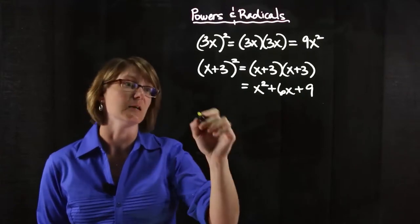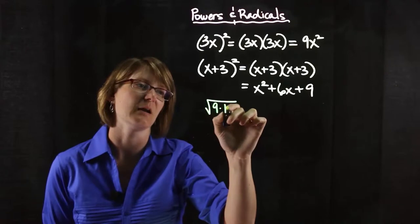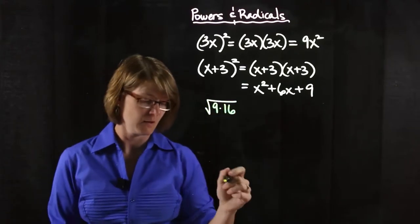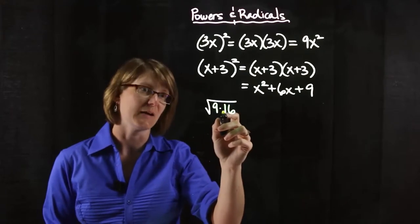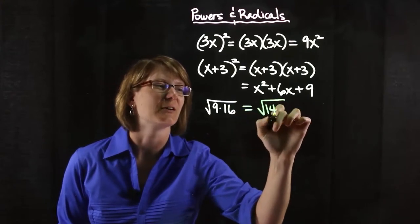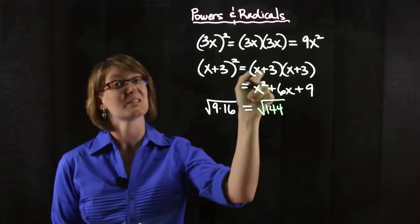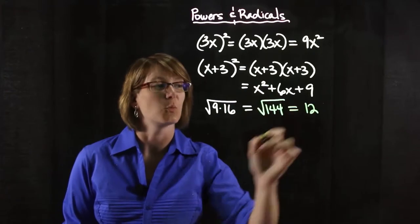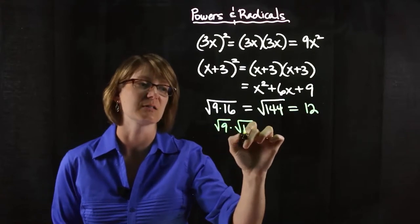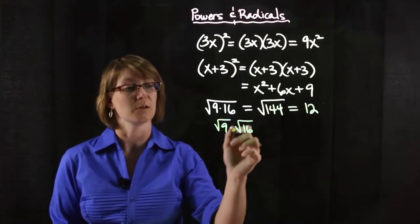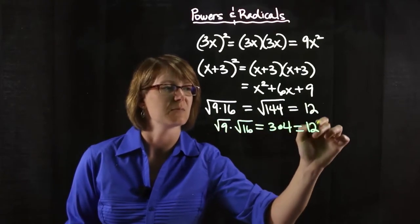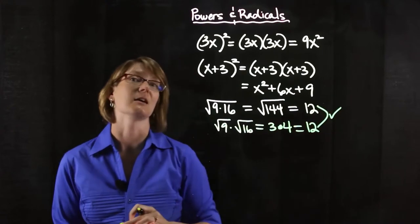Radicals work kind of similarly, so let's say we're going to do the square root of 9 times 16. I just picked perfect squares because they're fairly nice. So if we were to actually multiply 9 times 16, that gives us the square root of 144, which is again a perfect square, so that gives us a total then of 12. And if I were to break this apart, I could do the square root of 9 and the square root of 16 separately. That's perfectly legit with this one because that would give me 3 times 4, which gives me the same thing as 12. These are the same.